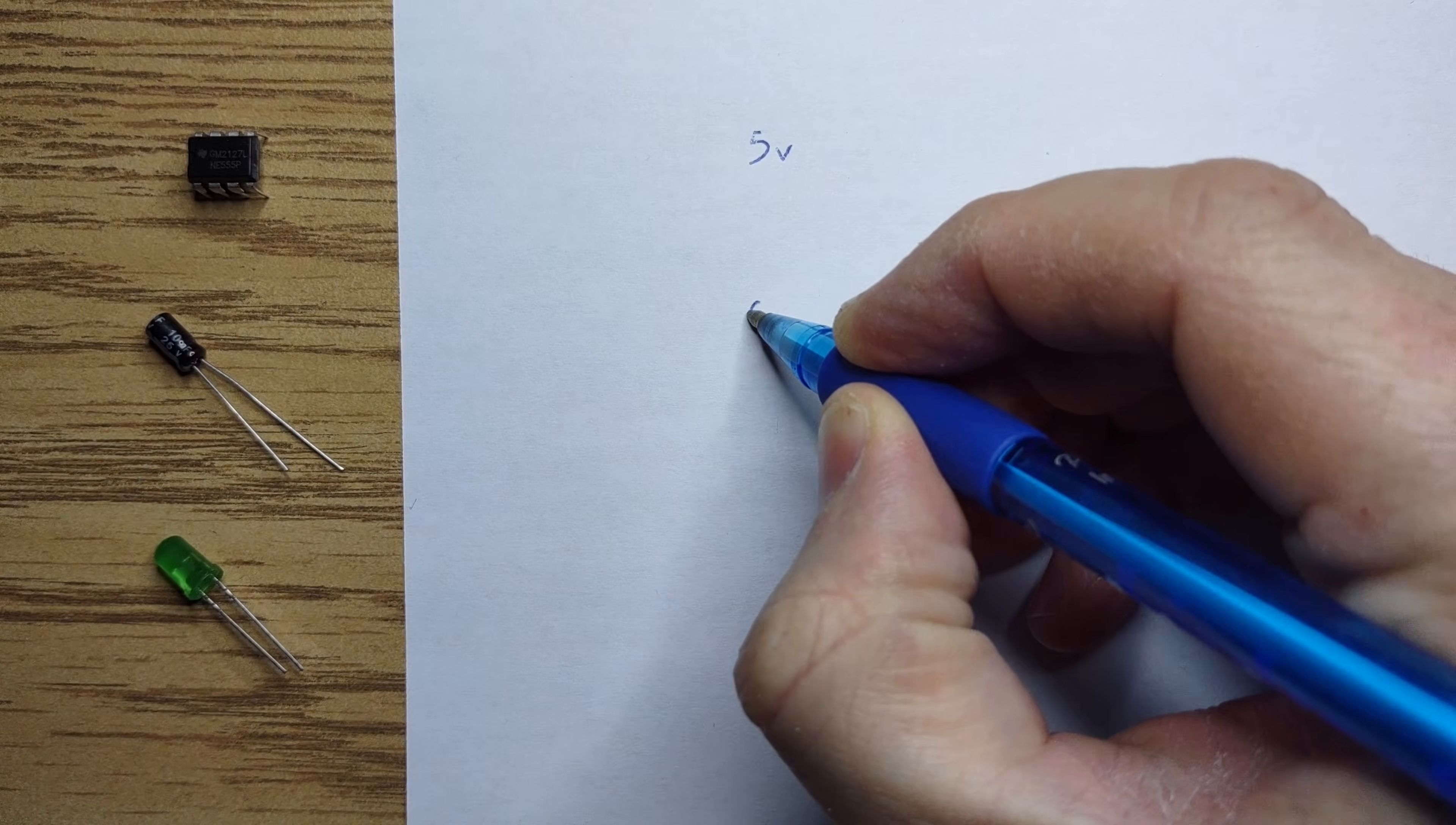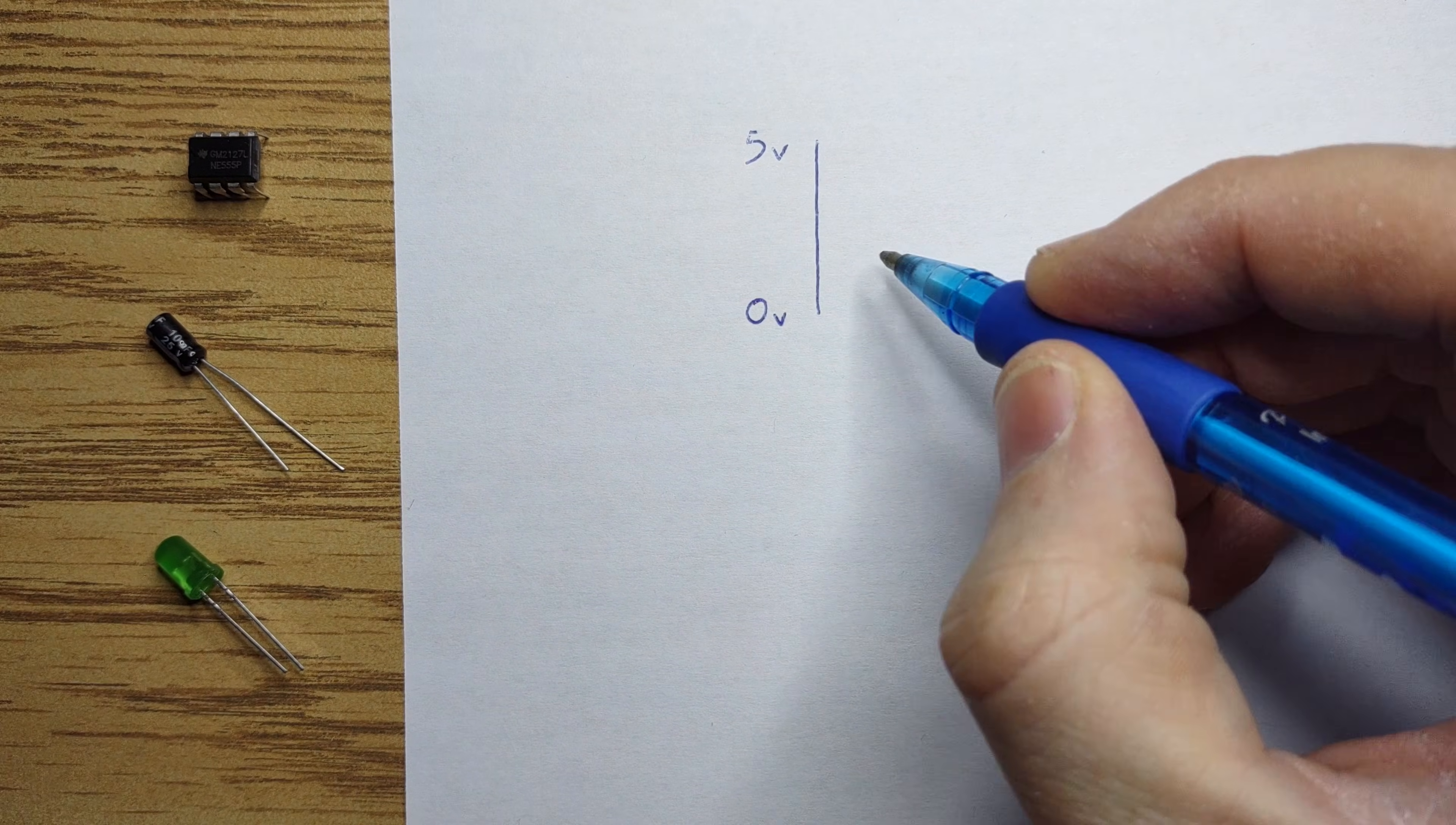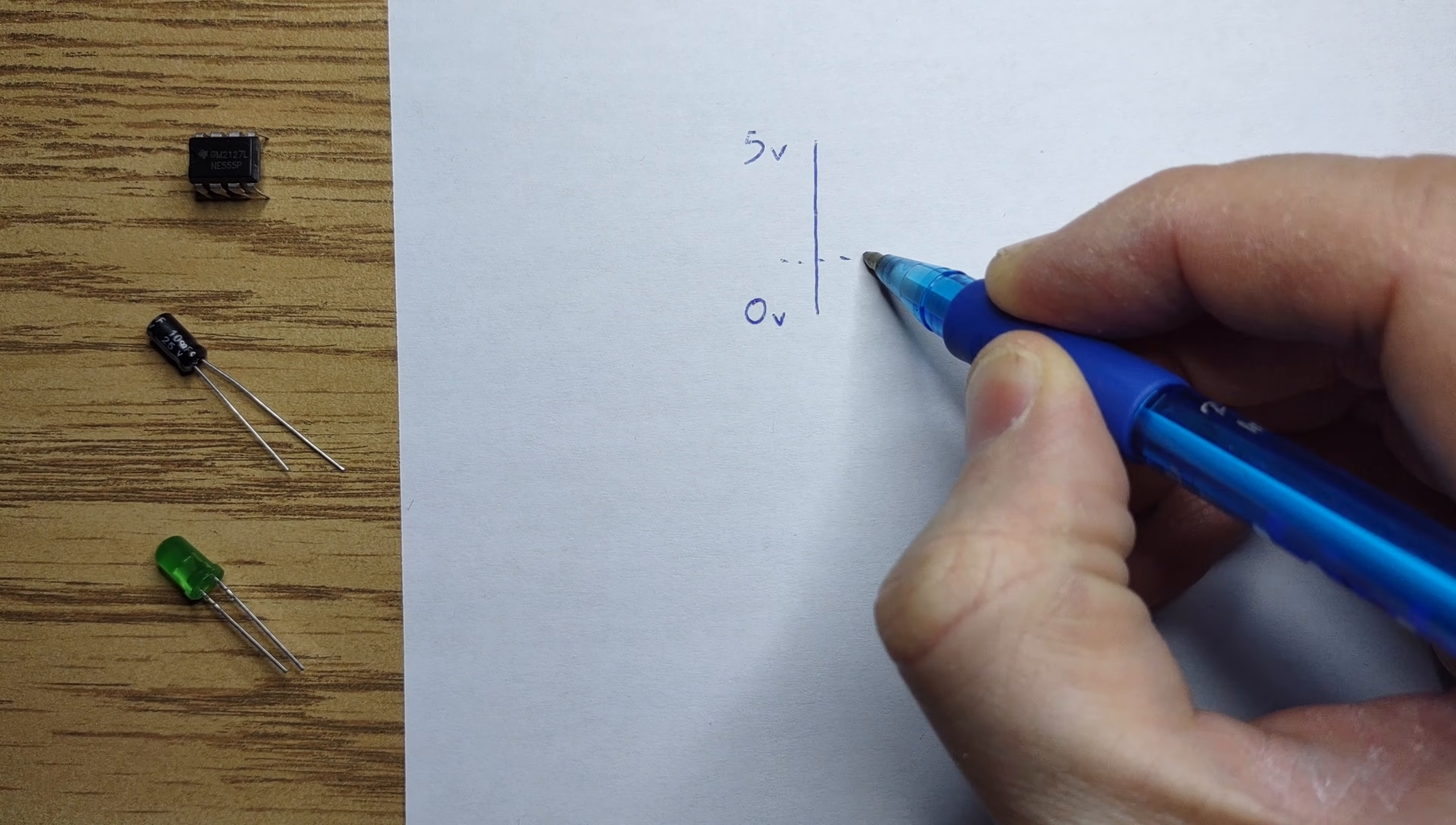The 555 timer has a flip-flop, a voltage divider, and two comparators. The voltage divider creates a reference level at one-third and two-thirds of our 5V supply.